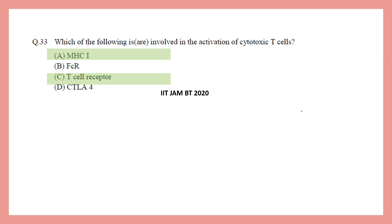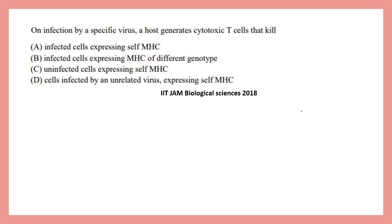They also ask about receptor interactions. For instance: on infection by a specific virus, a host generates cytotoxic T cells that kill — A) infected cells expressing self-MHC, B) infected cells expressing MHC from a different genotype, C) uninfected cells expressing self-MHC, or D) cells infected by an unrelated virus expressing self-MHC. The correct answer is option A.